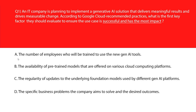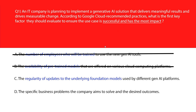Option A says the number of employees who will be trained to use the new gen AI tools. Training headcount is crucial for rollout but doesn't reveal which use case delivers the greatest impact — incorrect. Option B says the ability of pre-trained models offered on various cloud computing platforms. Ready-made models speed deployment, yet won't identify the highest value application — eliminate. Option C says the regularity of updates to the underlying foundation models used by different gen AI platforms.